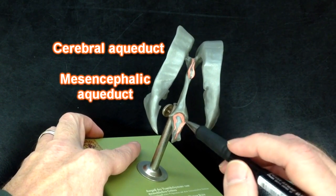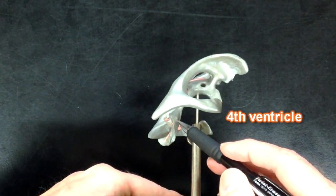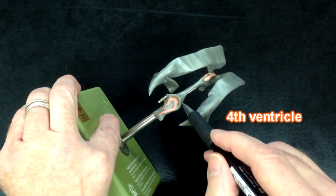That would bring cerebrospinal fluid down into the fourth ventricle, which we would be able to see here, and here.